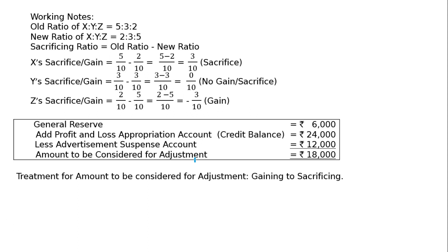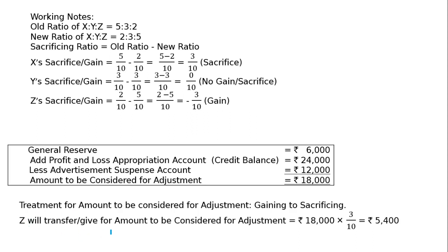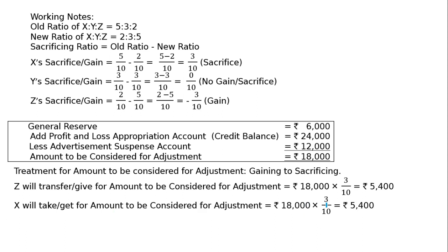Treatment of amount to be considered for adjustment is from gaining to sacrificing. Z will transfer, so Z's capital account will be debited and X's capital account will be credited. The amount is 8,000 multiplied by 3/10, which equals 5,400. So Z's capital account is debited to X's capital account for 5,400.